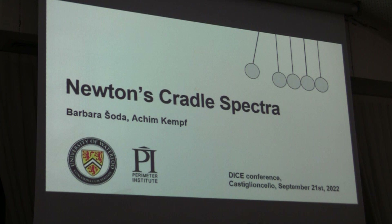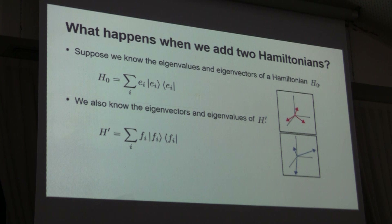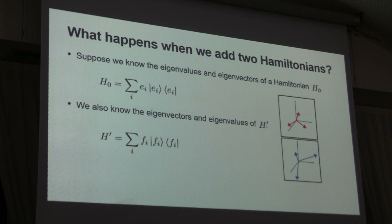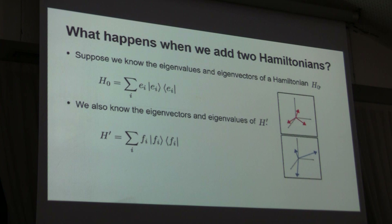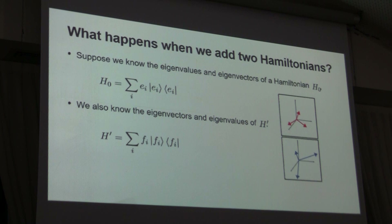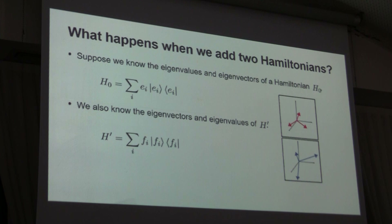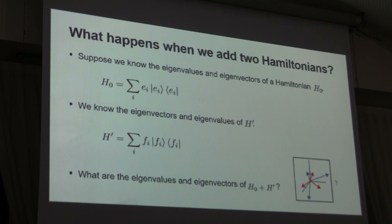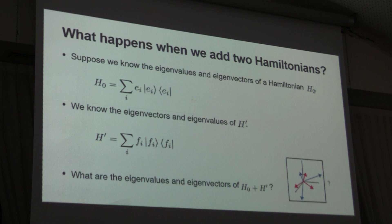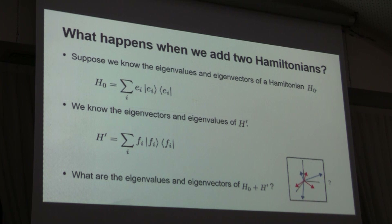This is work done with Achim Kempf. The essence of this work is trying to answer the question of what happens when we add two Hamiltonians. Let's say you know the eigenvalues and eigenvectors of some Hamiltonian H0, and you also know the eigenvalues and eigenvectors of another Hamiltonian H prime. It's still complicated to know the eigenvalues and eigenvectors of H0 plus H prime. This is a typical situation in physics: you start off with some free Hamiltonian, add an interaction Hamiltonian, and then you need to find the new eigenvectors and eigenvalues.